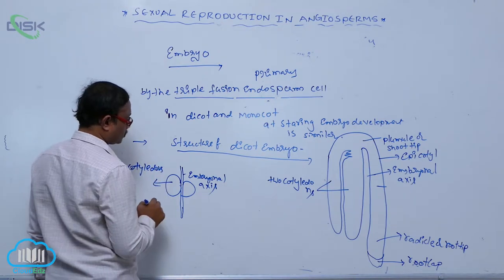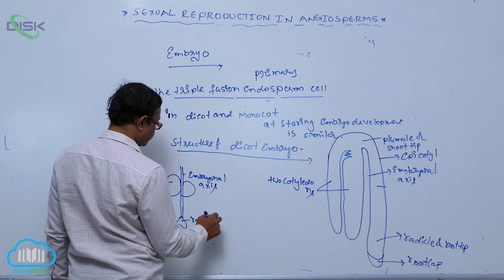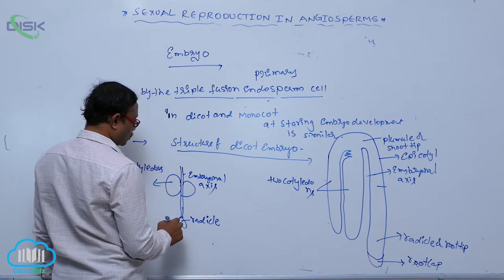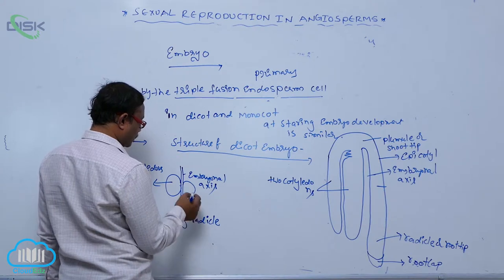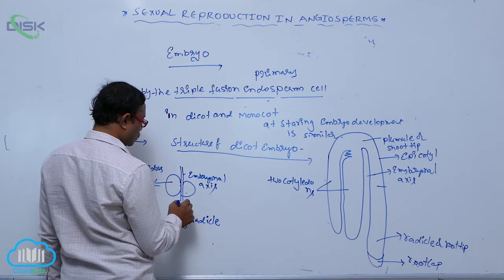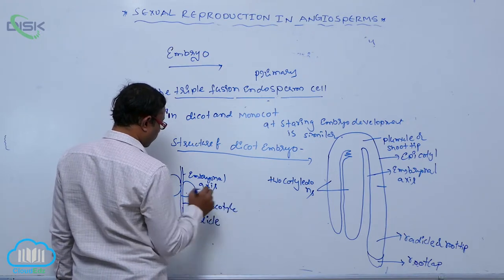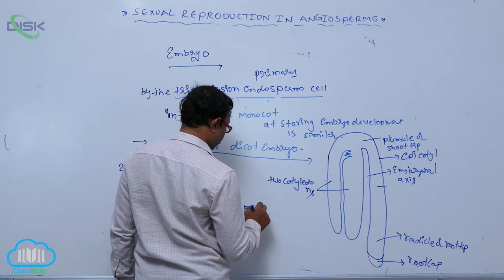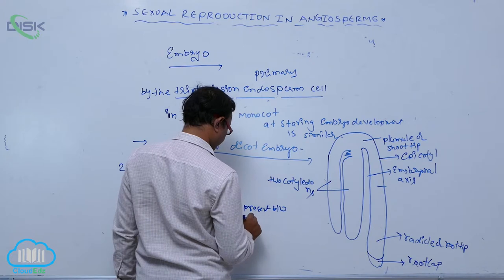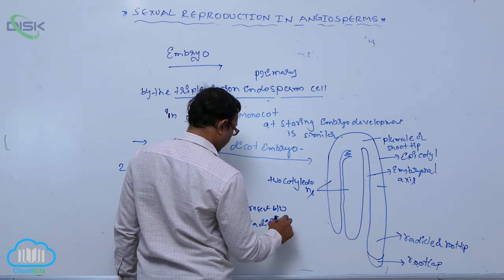Below the embryonal axis, the part is known as the radicle. Between the radicle and the cotyledons, that region is known as the hypocotyl. So hypocotyl is present between the radicle and the cotyledons.